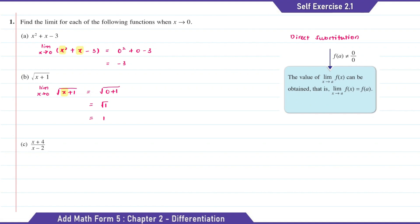The answer of square root 1 is equal to 1. Question C: we're going to substitute x with 0, then we get 0 plus 4 over 0 minus 2, which is equal to 4 over negative 2, which is equal to negative 2.